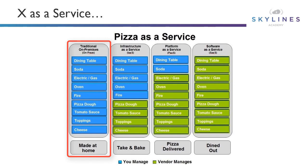You have to buy the cheese, the tomato sauce, the pizza dough. You make the fire or heat up the oven. You're responsible for the electric, the gas. You put it on your own dining room table and provide your own Coke or Sprite or whatever you want to accompany with your pizza. That's making it at home — you're responsible for everything.